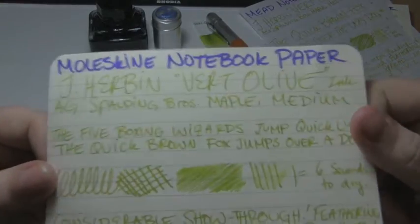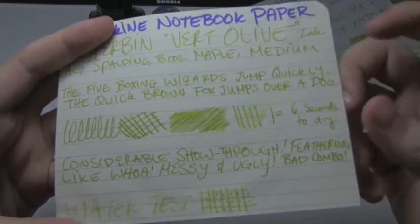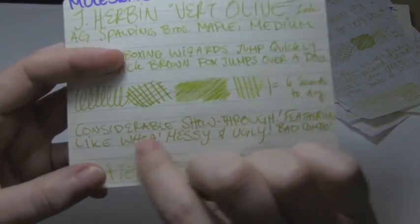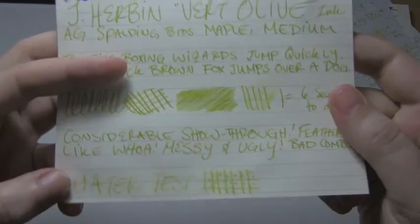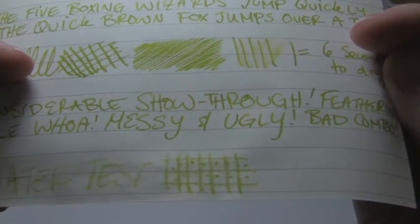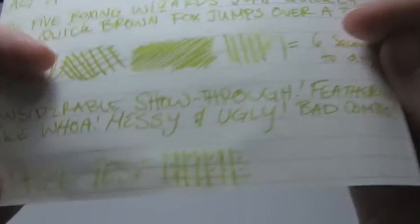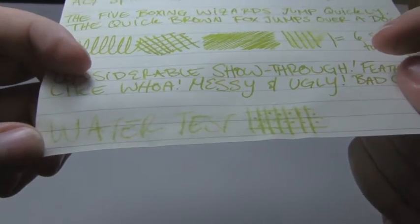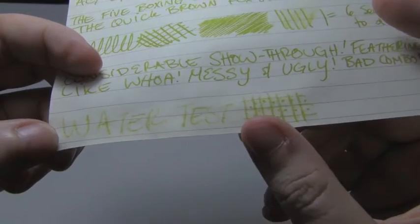Anyways, here's Moleskine notebook paper. Six seconds to dry. I said considerable show through. Lots of feathering. I hope that comes through. It's, I said it's messy, it's ugly, it's a bad combo. Look at that water test. I mean, it exploded, it dyed the paper. Again, this would look much worse if it were a darker ink, because it's come through all over.